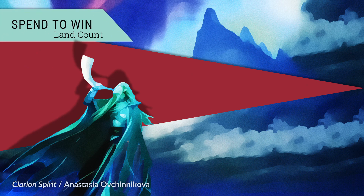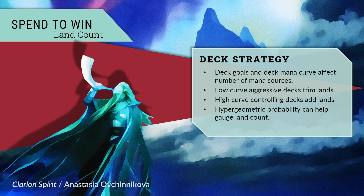It is important to recognize that deck goals affect the number of lands you want. Low-curve aggressive decks can shave lands aggressively — in a cube format, lean mono-red or mono-white decks capping their curve at 3 mana value could trim land count to 13 or even 12. This is unlikely to be viable in retail limited. Conversely, even in retail limited, higher-curve controlling decks may prefer 18 or 19 mana sources, and this is even more likely in sealed, where one often dips into 3 or more colors.